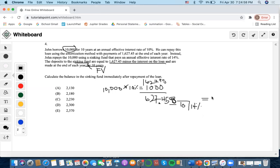I would input negative 627.45 as the payment, 10 as the number of years, 14 as the interest rate, 0 as present value. We compute the future value and get $12,133.19.